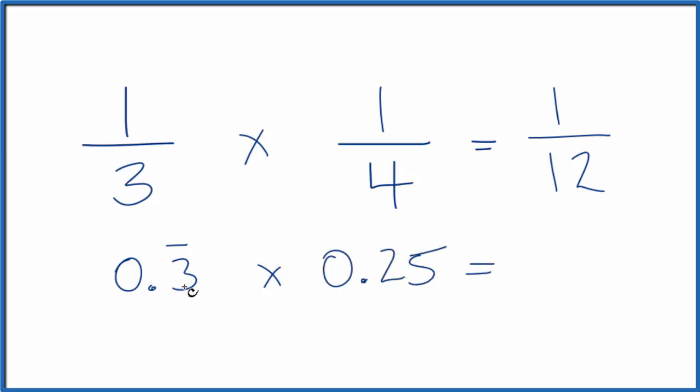We multiply 0.3 repeating times 0.25 and we get 0.1666... the six repeats. If you take one divided by twelve, you'll end up with 0.16 repeating.